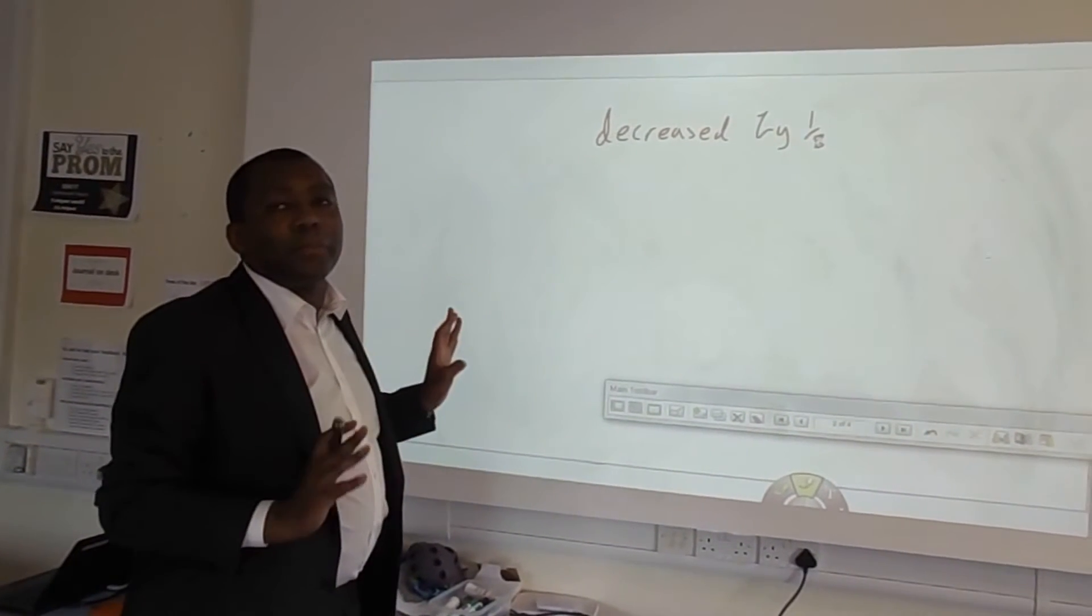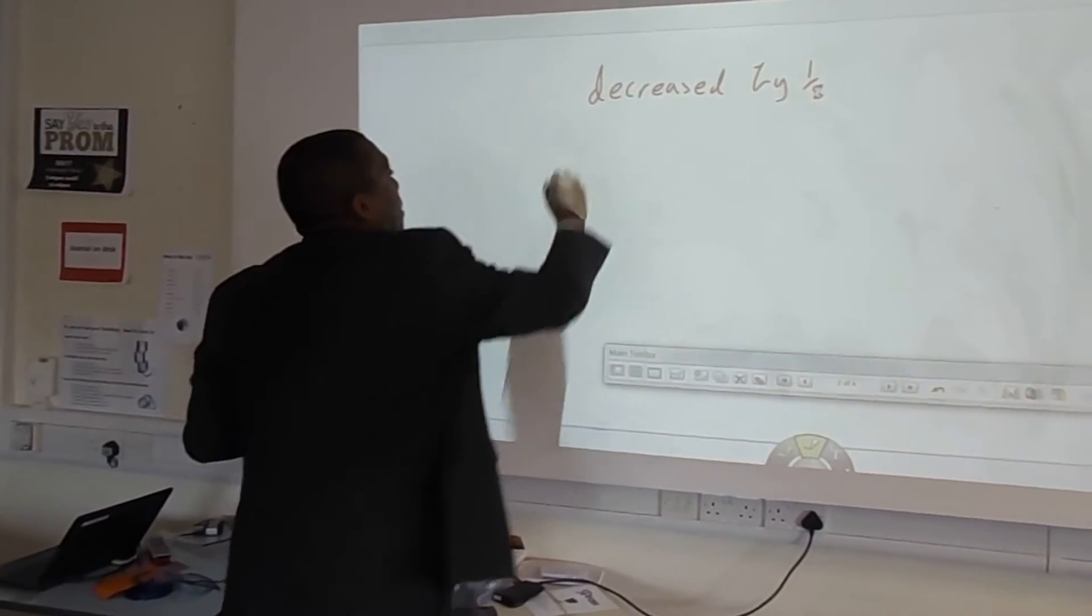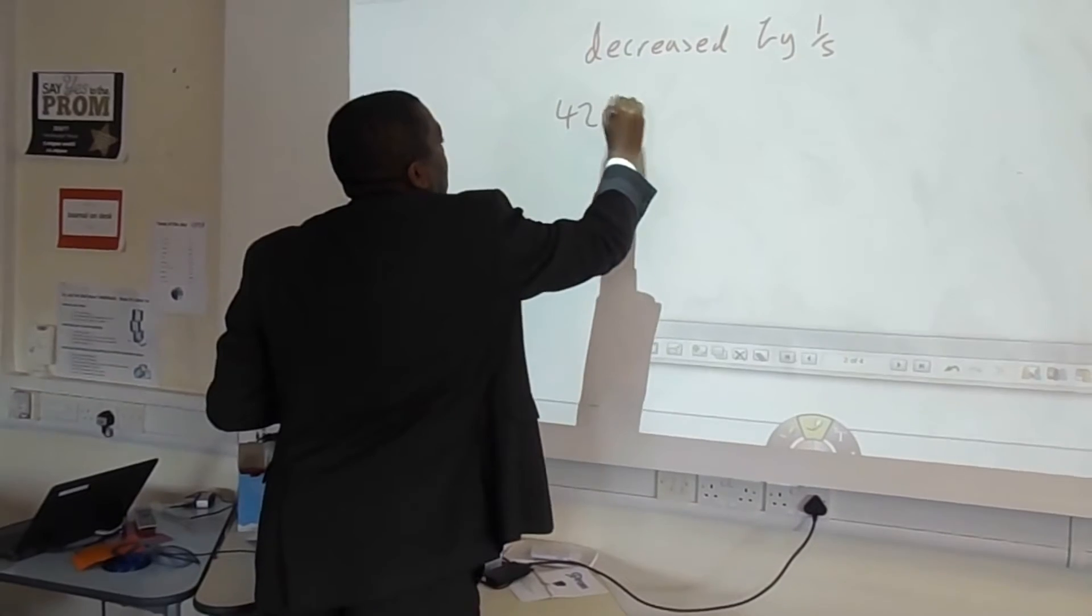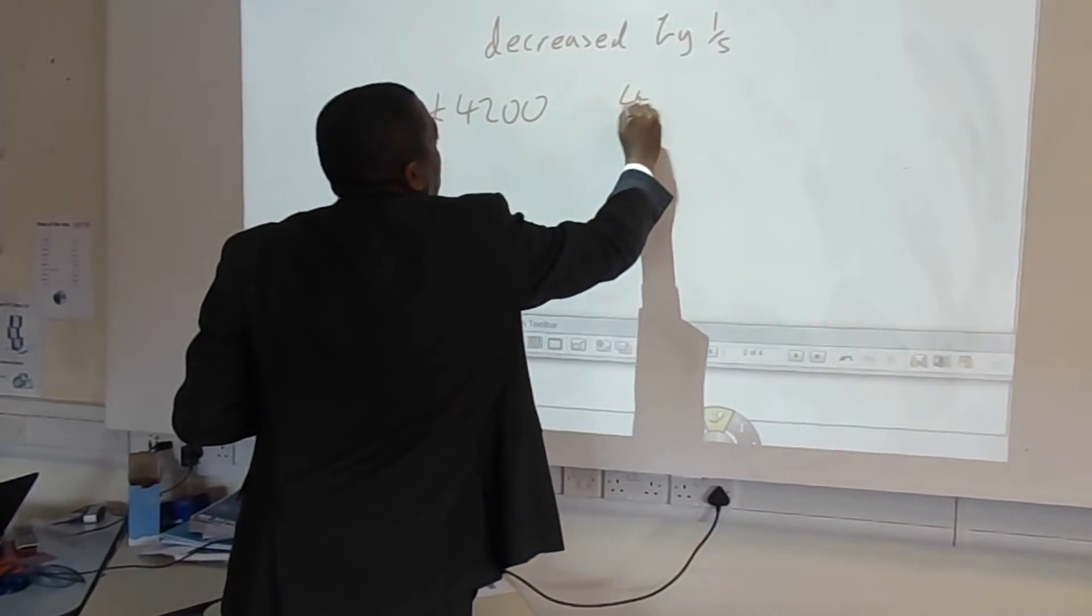Because before it was 5 fifths, it's gone down by a fifth, that leaves you 4 fifths. So 4,200 is now equivalent to 4 fifths.